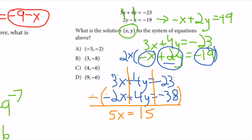So 5x = 15. I divide by 5 to get x = 3. I can save time by noticing that answer B is the only one that has x = 3, so automatically I know my answer is B.